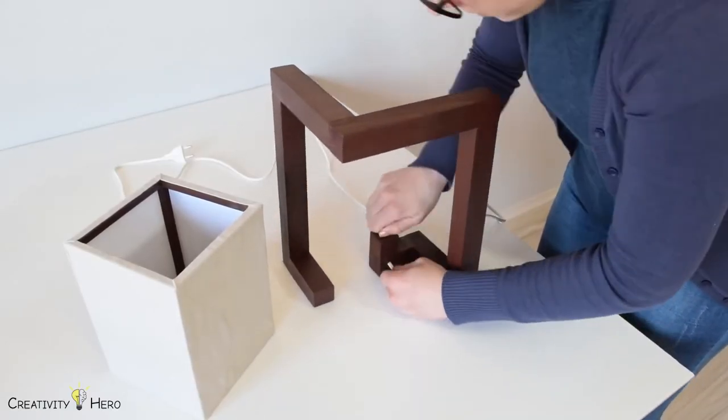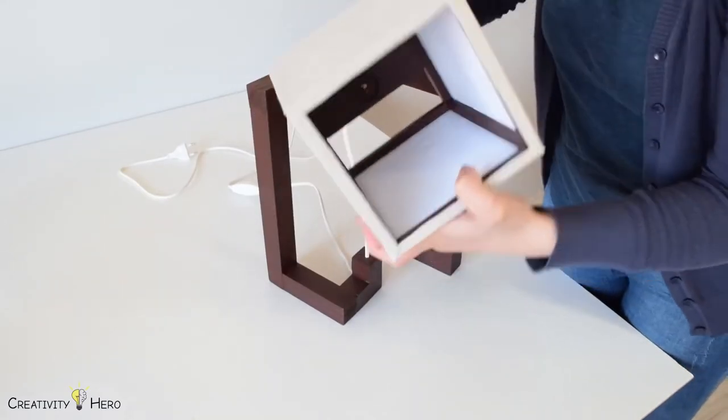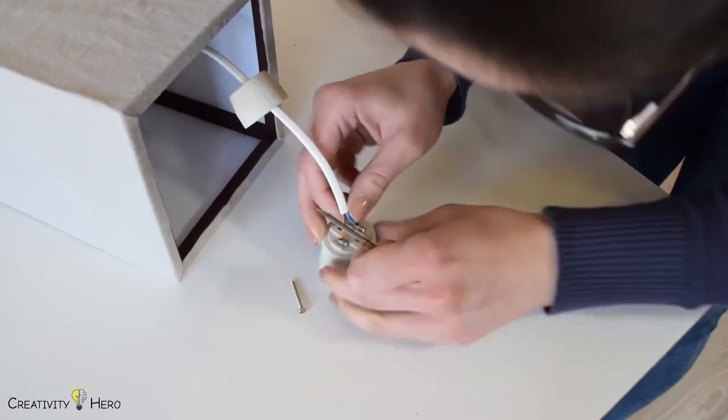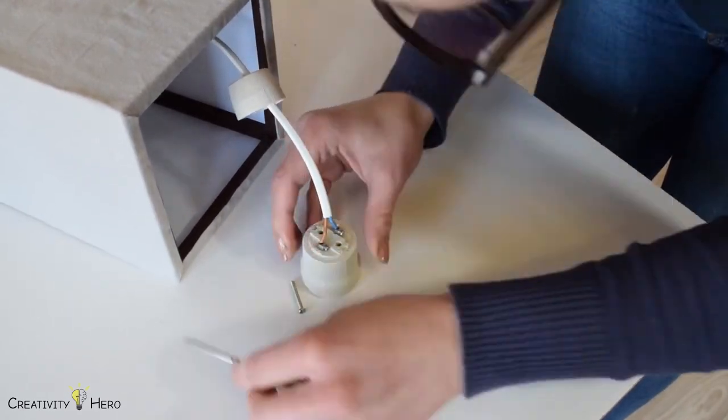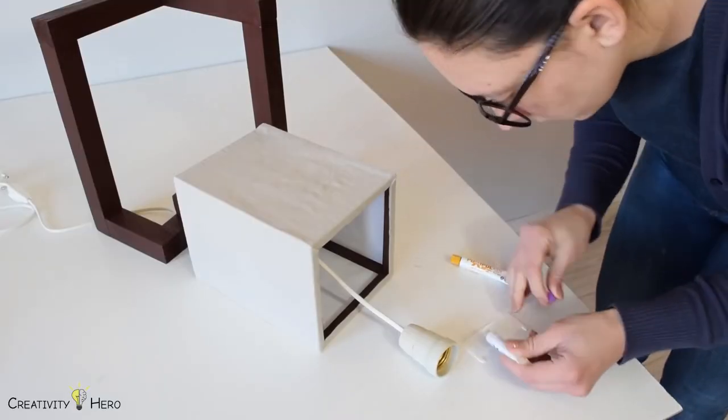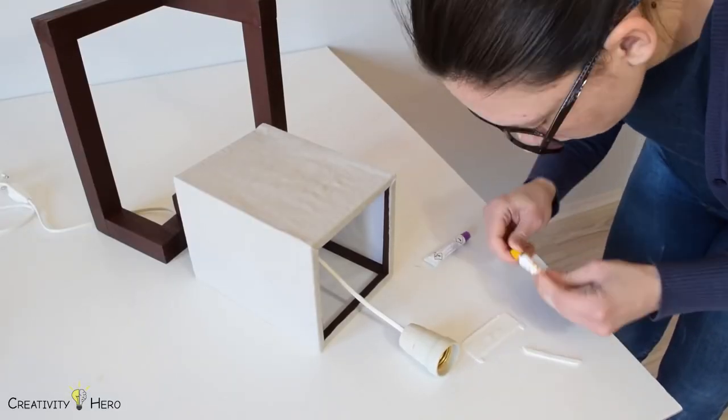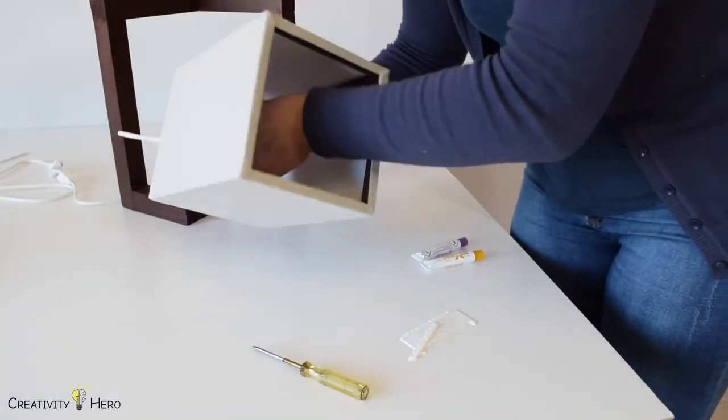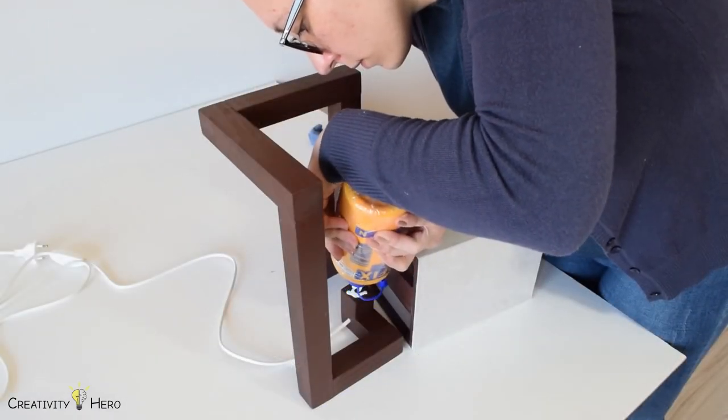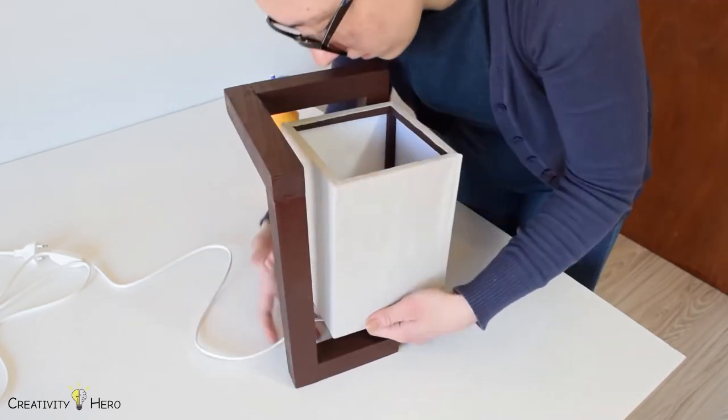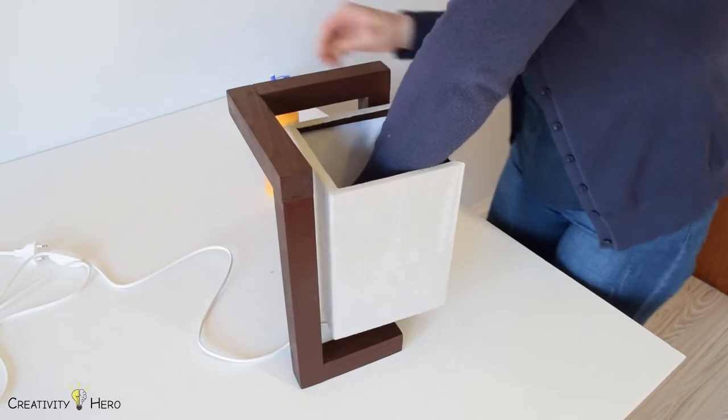Now I can finally put all the pieces together. I'm mixing up some 5-minute epoxy to stick the socket. I made sure everything was lined up and then used wood glue to stick the lampshade to the base. I held it with finger pressure for only a few minutes until the glue started to harden.